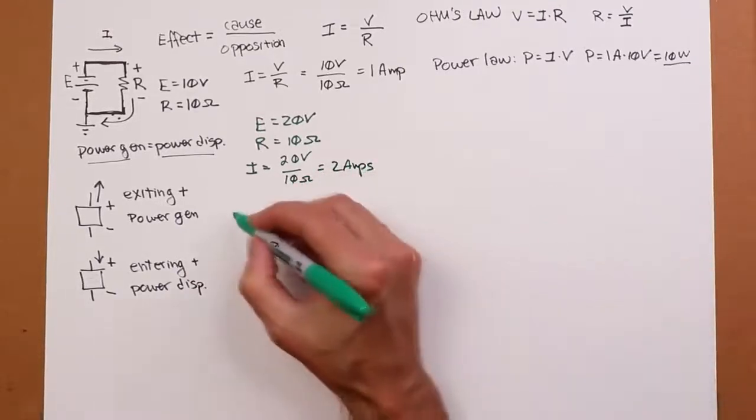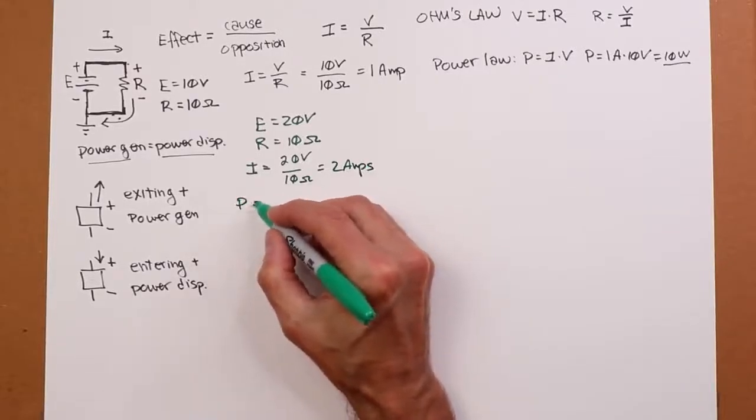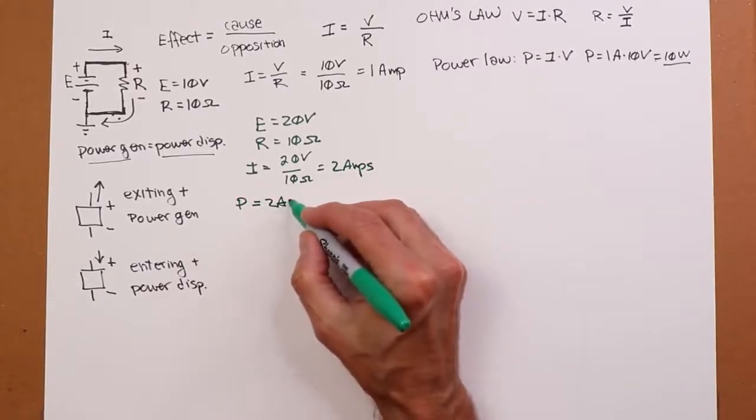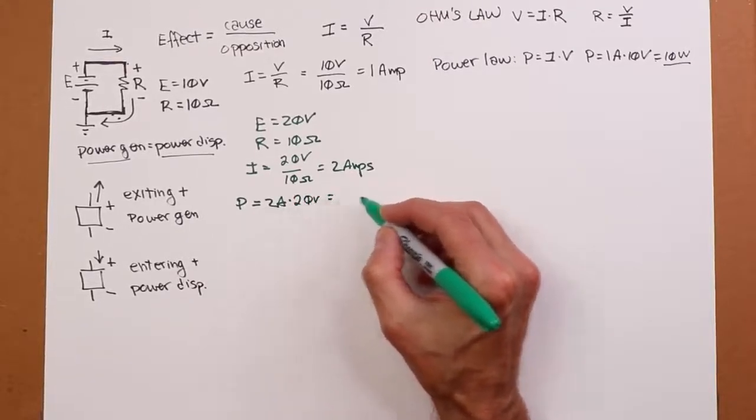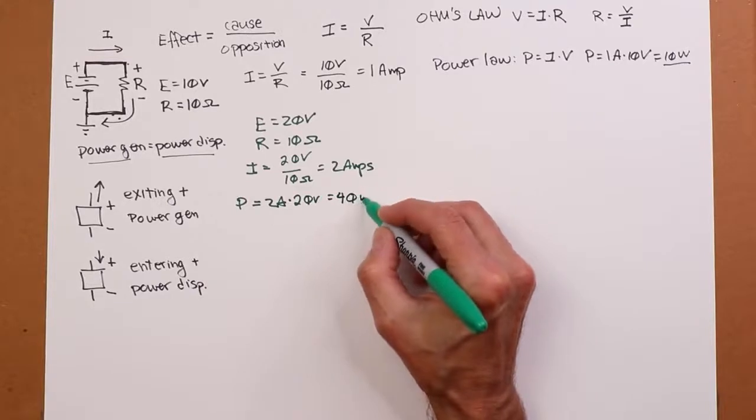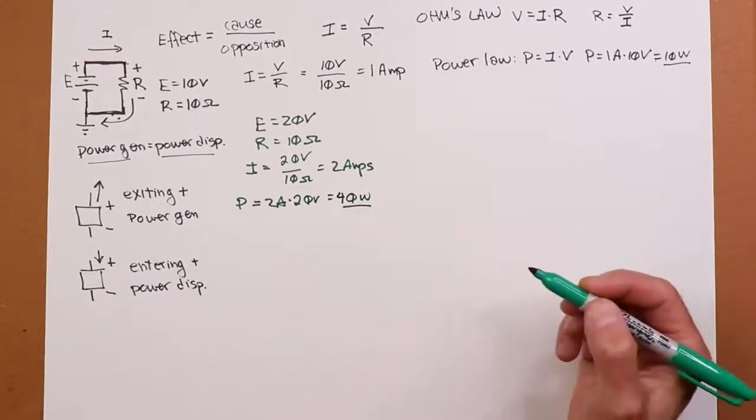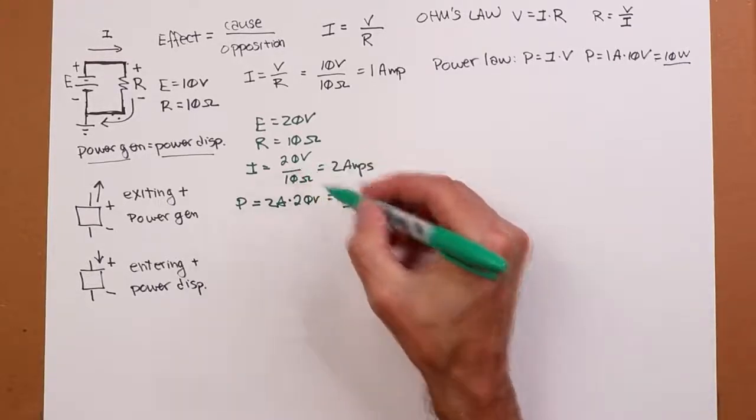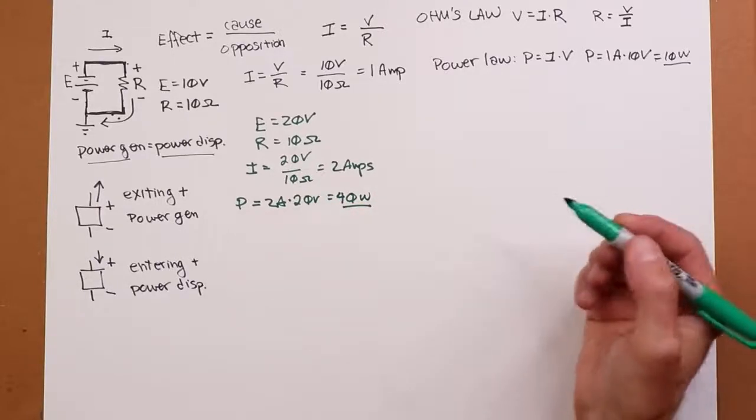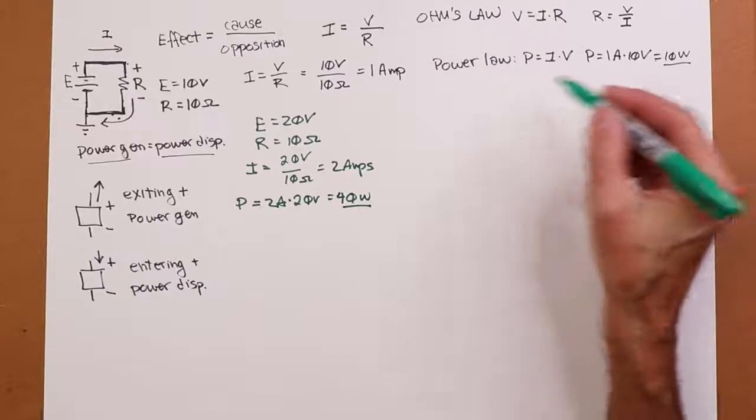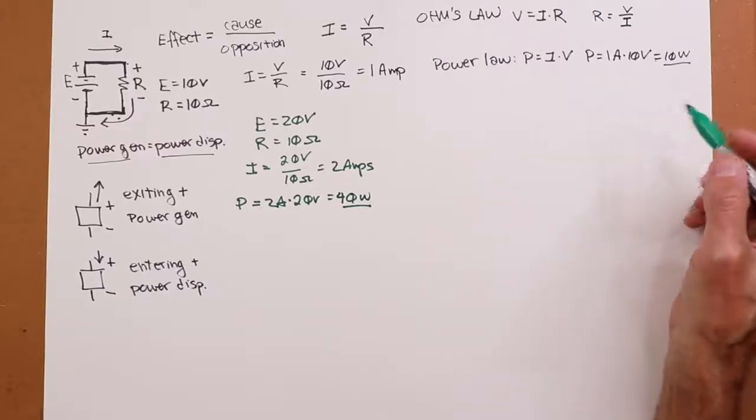The resulting power is going to be 2 amps times the 20 volts. That's 40 watts. Now notice we have doubled the voltage and we've quadrupled the power.